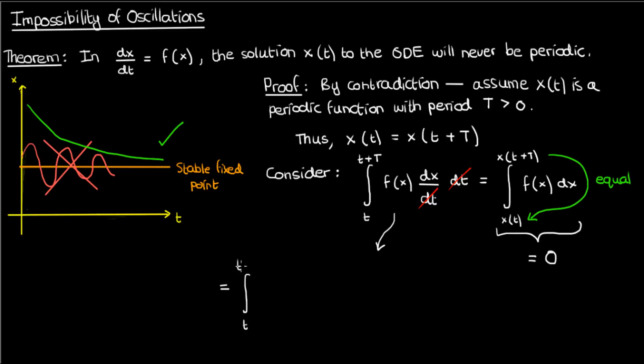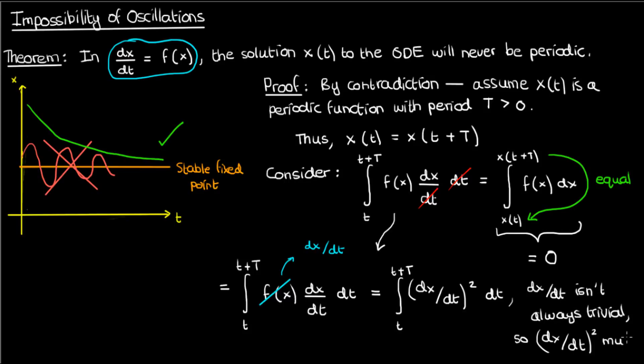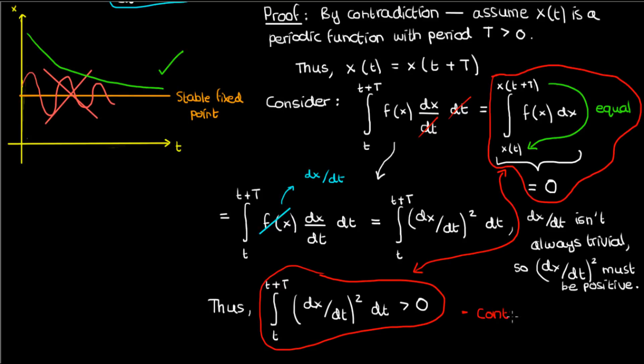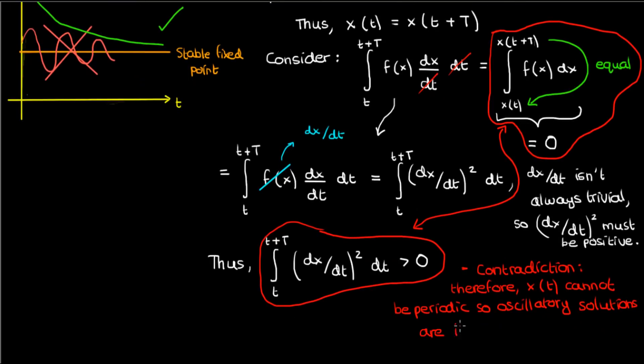Let's now go back to our original integral and approach it in a slightly different manner. From the equation for dx/dt, we know that dx/dt equals f(x), so let's replace the f(x) here by dx/dt, and we'll get the integral from t to t+T of (dx/dt) squared. Now dx/dt isn't trivial, it's not necessarily always zero, which means that the square of dx/dt can be largely positive. And if we're integrating something positive over a finite non-zero interval, obviously since capital T must be greater than zero, then the result must be positive as well. But the fact that this integral must be positive contradicts the fact that it equals zero when we assume that the function x was periodic. Therefore, we can conclude that the solution x to this autonomous ODE must not be periodic, which proves that oscillations are impossible for this dynamical system.